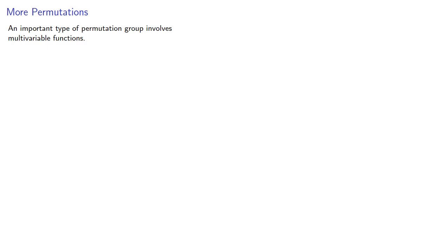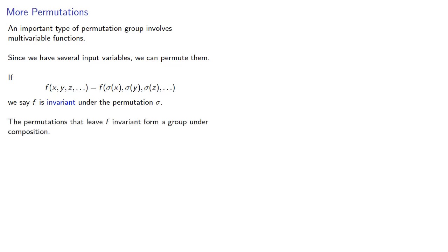An important type of permutation group involves multivariable functions. Since we have several input variables, we can permute them. If f of x, y, z, and so on is f of the permutation of x, y, z, and so on, we say that f is invariant under the permutation sigma. The permutations that leave f invariant form a group under composition.